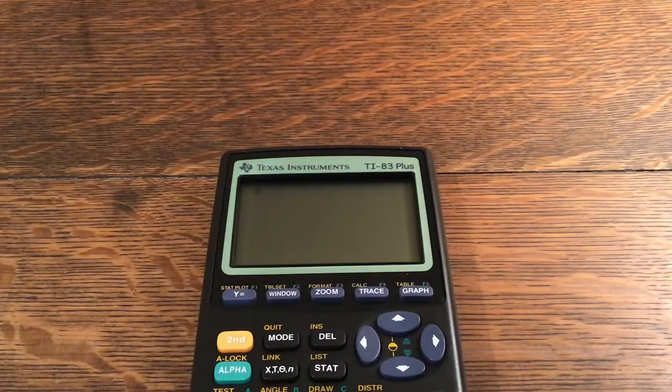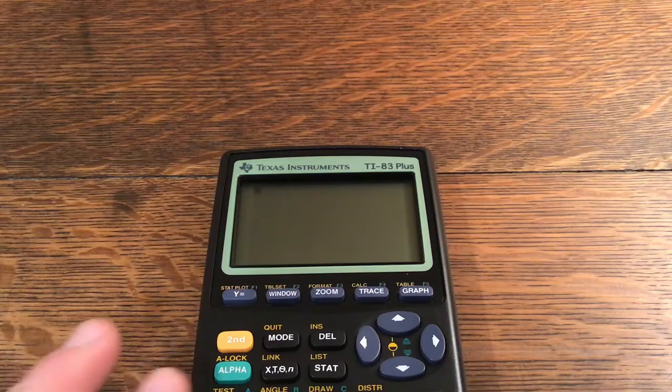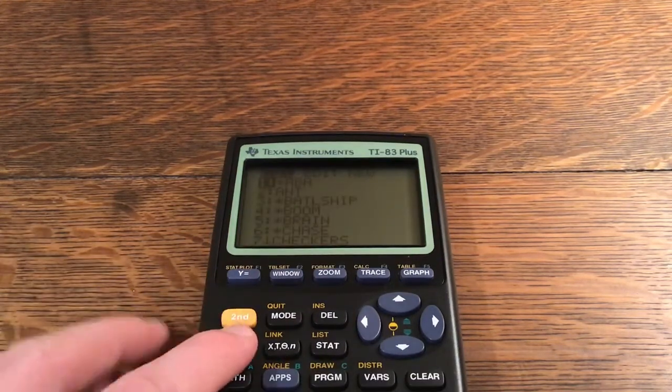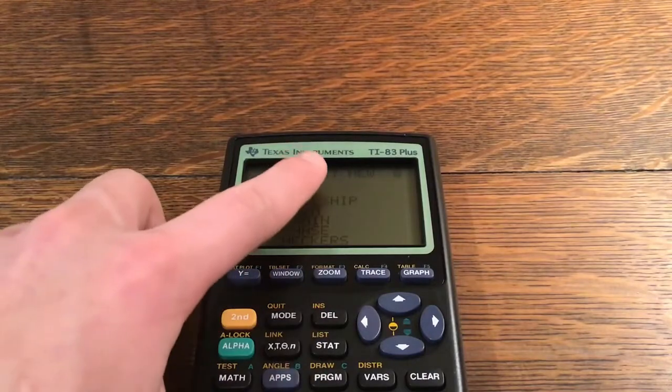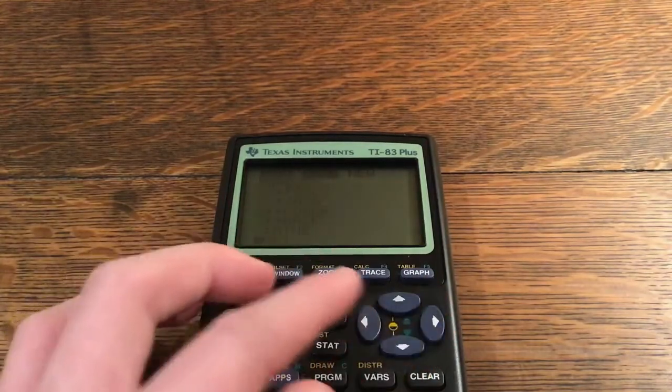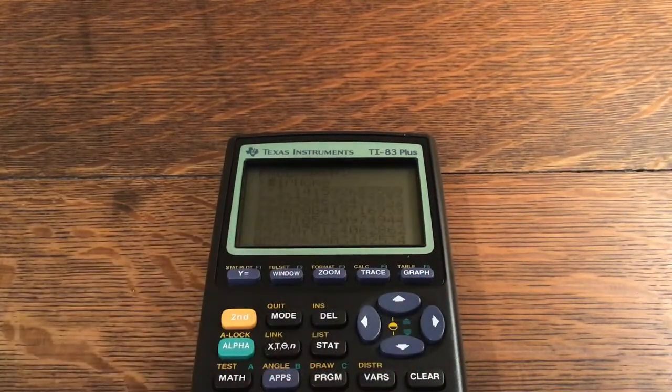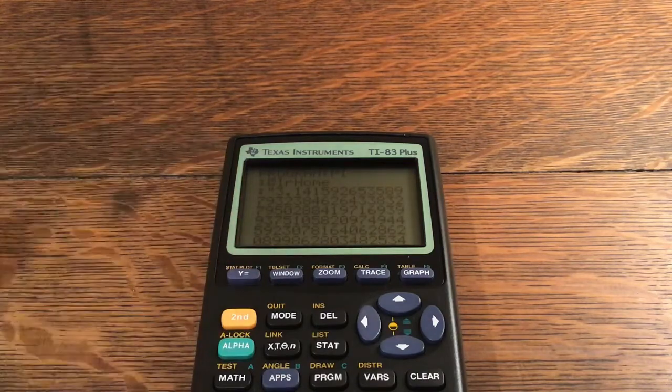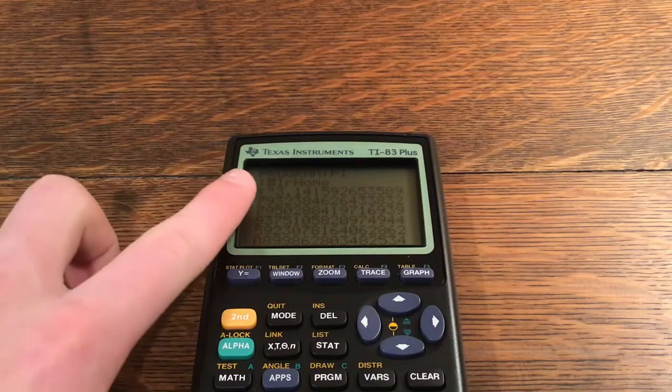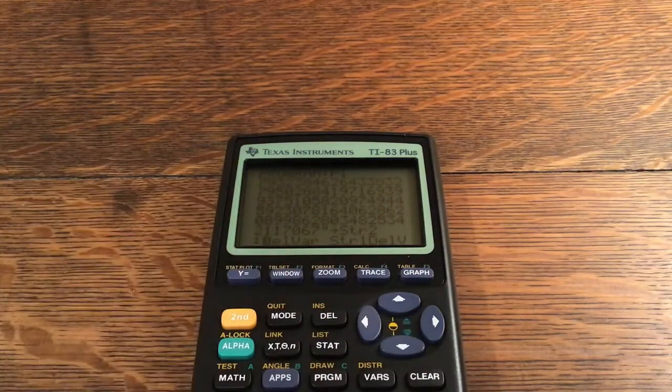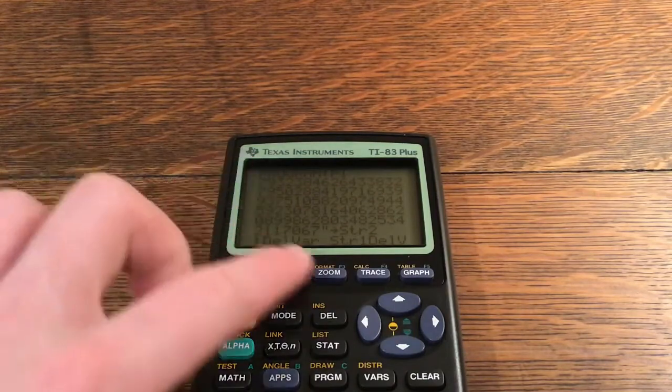Okay, so now that you have seen a demonstration of program pi, I'm now going to show you how you can make it on your own calculator. So go to the new tab, you go to the new tab, but since I already have it created I'm just going to edit program pi. As you can see, the first step is to clear home, so it's clearing anything off that you may have on your home screen.